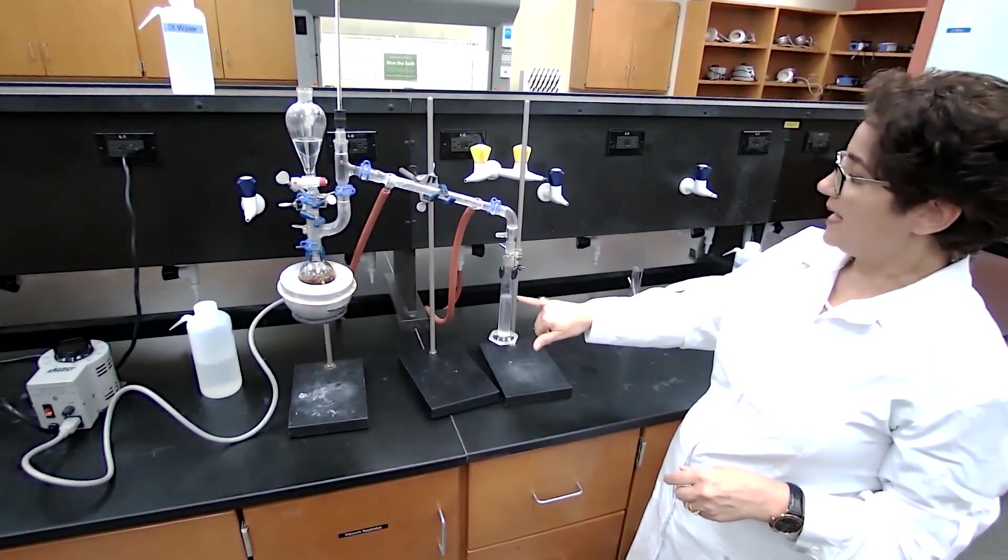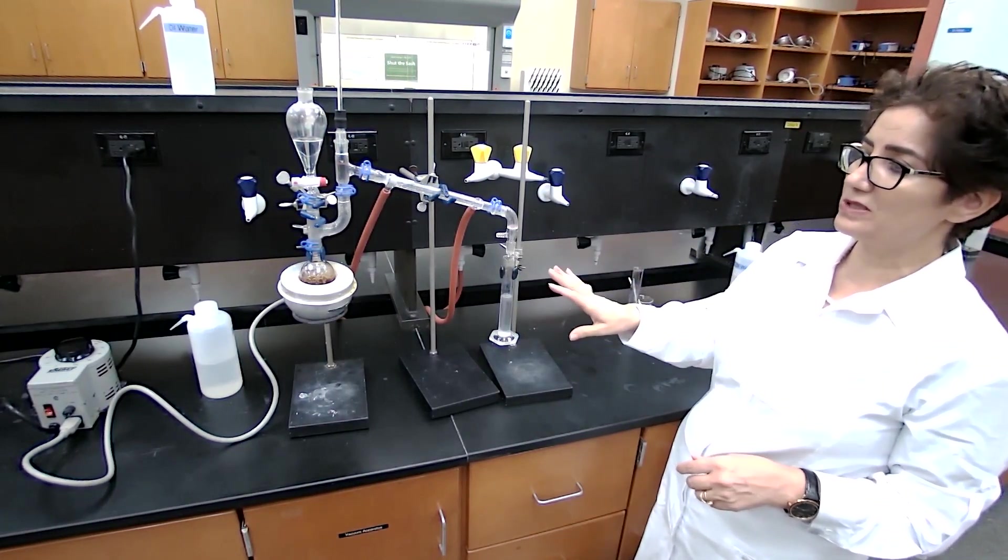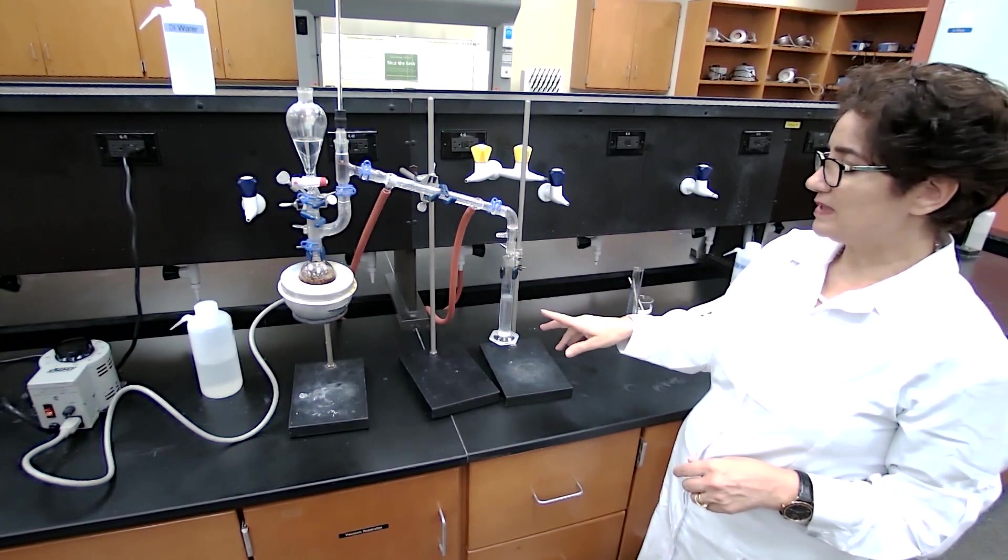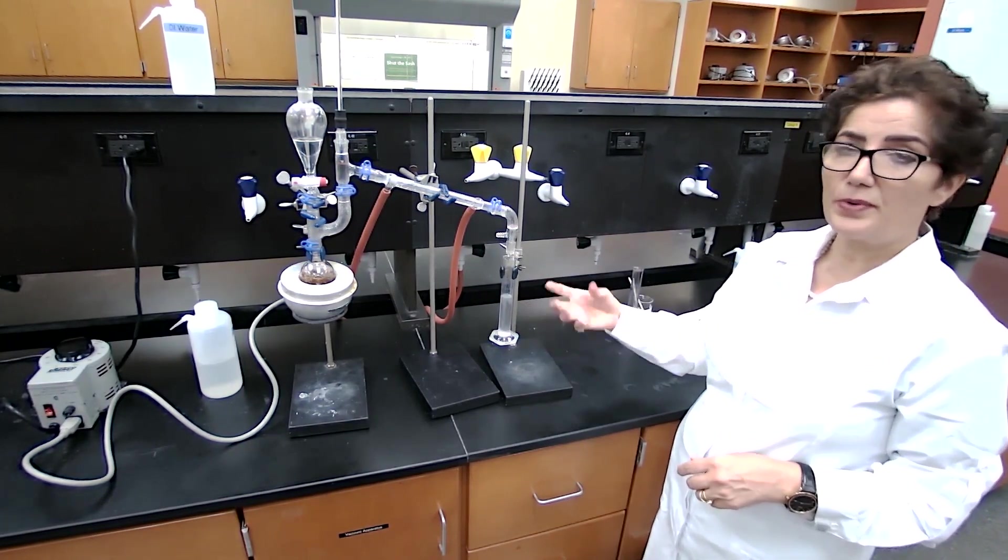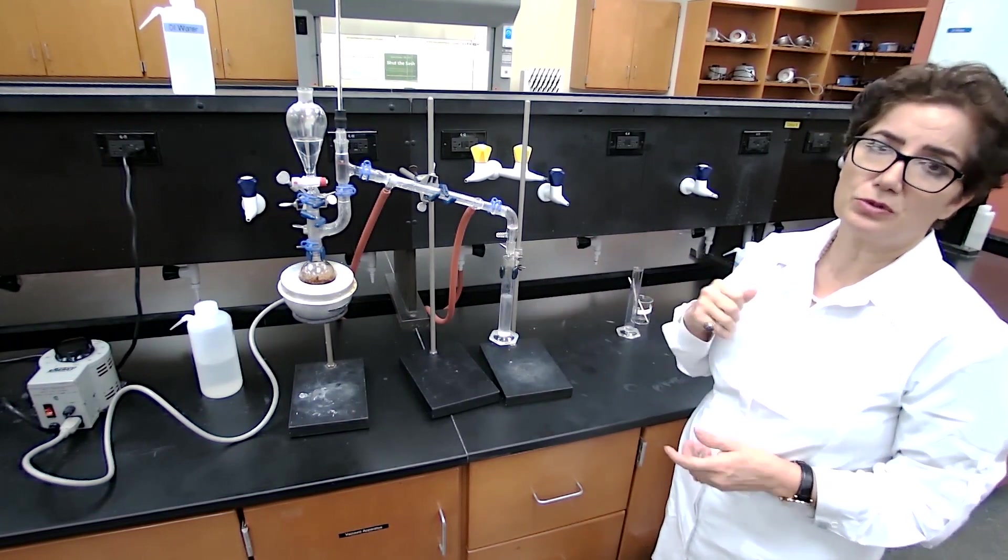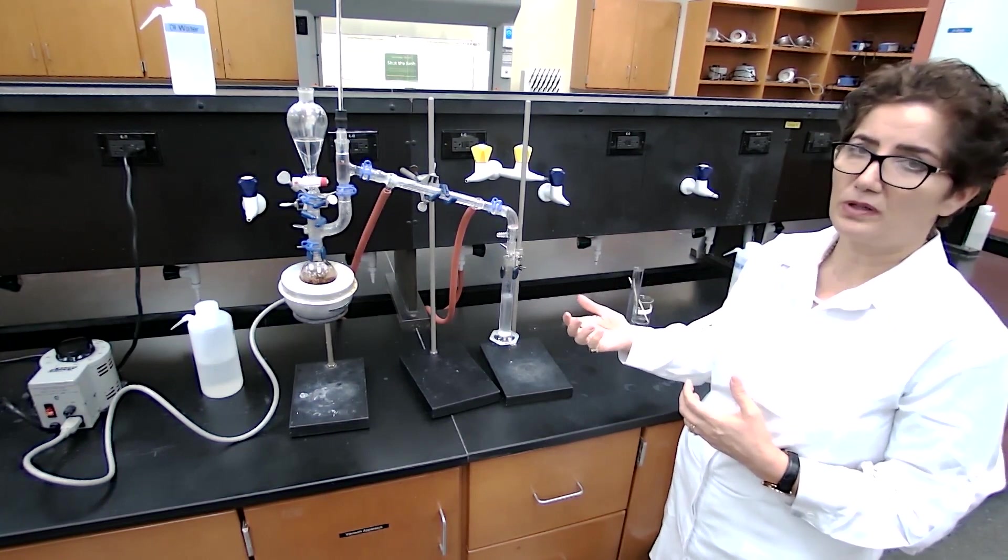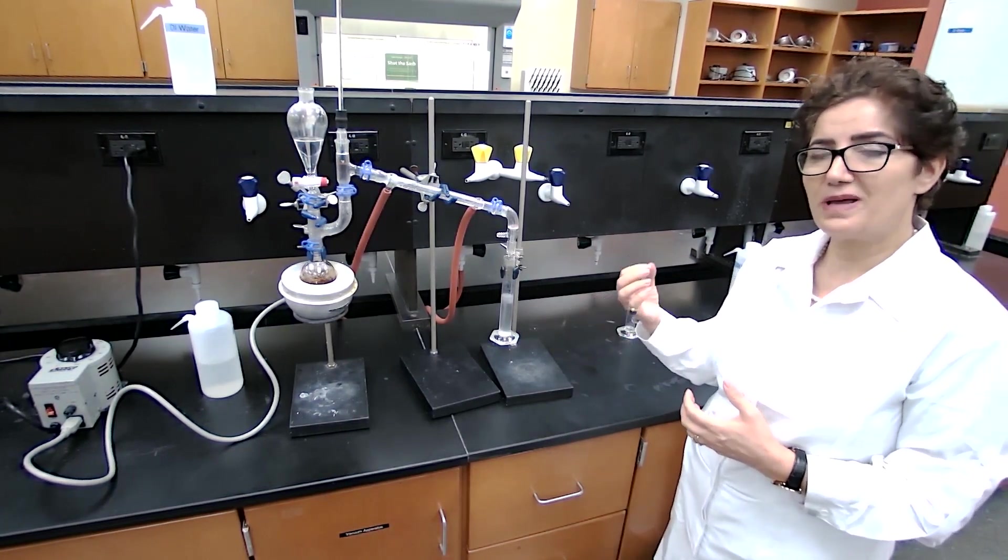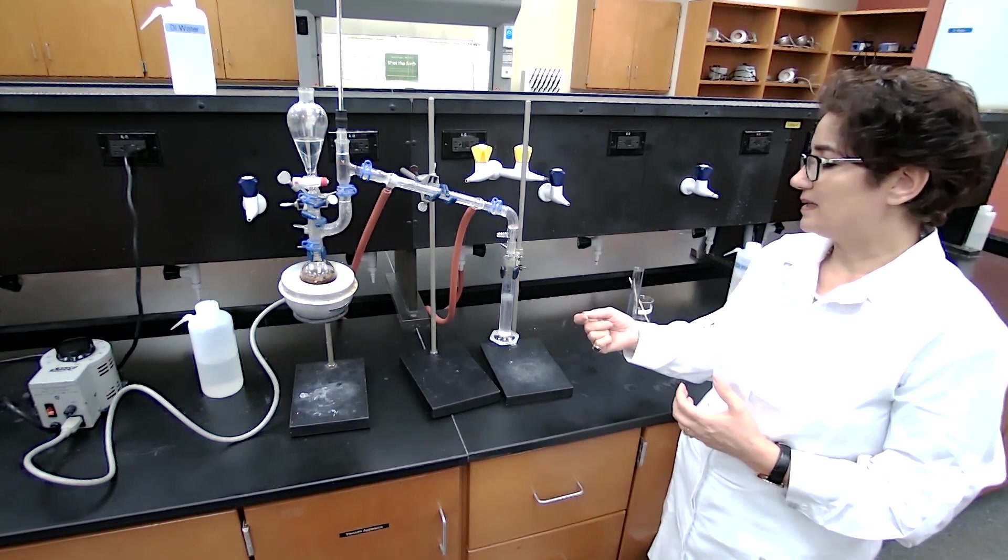We have collected about 40 milliliters. That's where we are going to stop the distillation. When we stop the distillation, since this oil is mixed with water, we are going to extract it into an organic layer to separate from the water. So we are using methylene chloride as the extracting solvent.